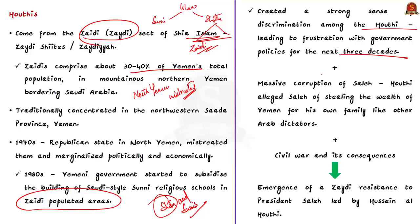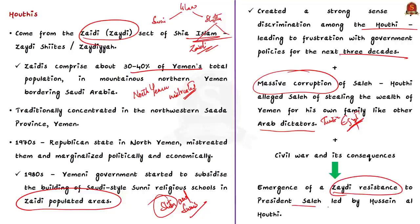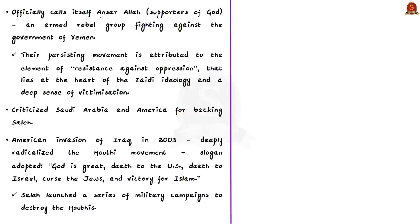In addition, President Saleh was alleged of massive corruption, as is common among Arab dictators. After the unification, tensions in Yemen continued leading to civil war. All of this together led to the emergence of Zaydi resistance to President Saleh. This resistance movement was led by a leader named Hussein al-Houthi, and the Zaydi group under him came to be known as Houthis. The group officially calls itself Ansar Allah, meaning the supporters of God. Simply put, Houthis are from the Zaydi community and are an armed rebel group fighting against the government of Yemen.